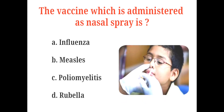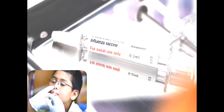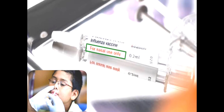The vaccine which is administered as a nasal spray is A. Influenza, B. Measles, C. Poliomyelitis, D. Rubella. And the correct answer is A. Influenza. The nasal spray flu vaccine is a vaccine made with live weakened viruses that cannot grow at normal body temperature and is given via a nasal sprayer.